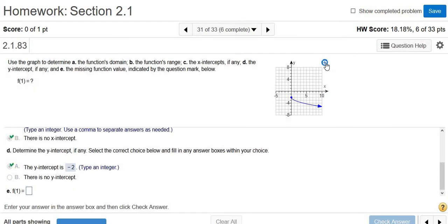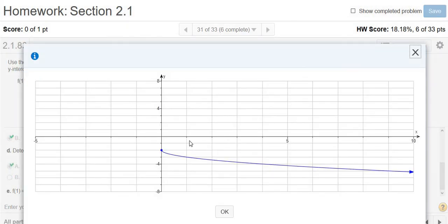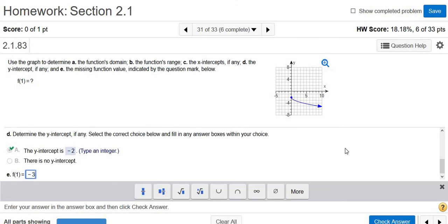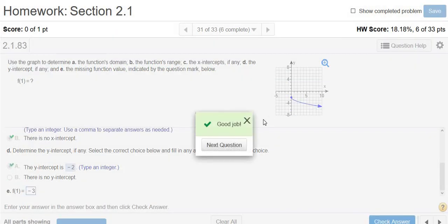And it wants f of 1. So f of 1 is the y value when x is 1. When x is 1, that's where my cursor is, the y value is 1, 2, 3, so negative 3. Check answer, and that's it.